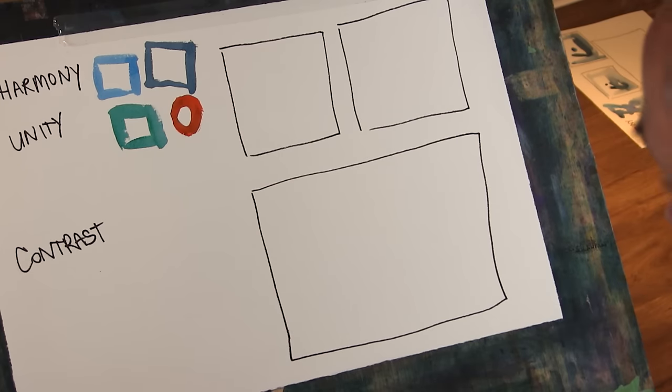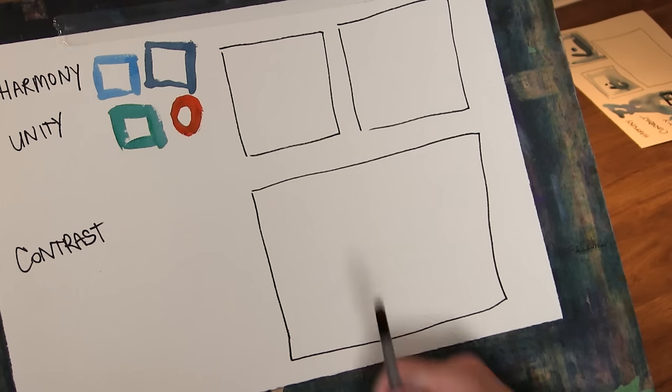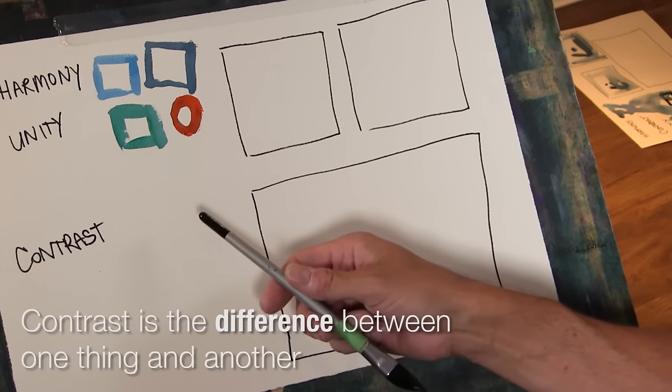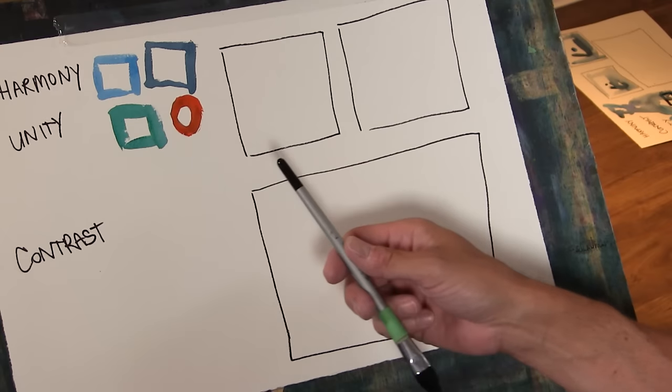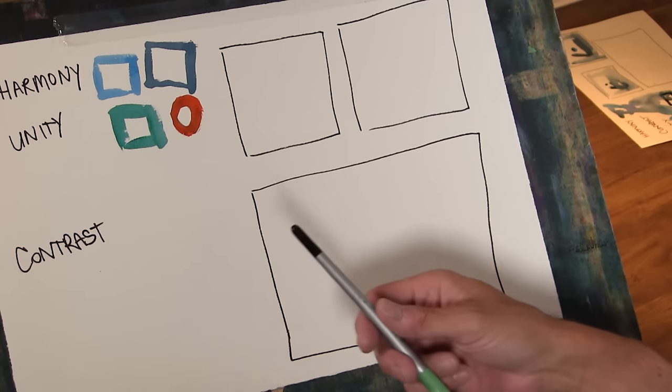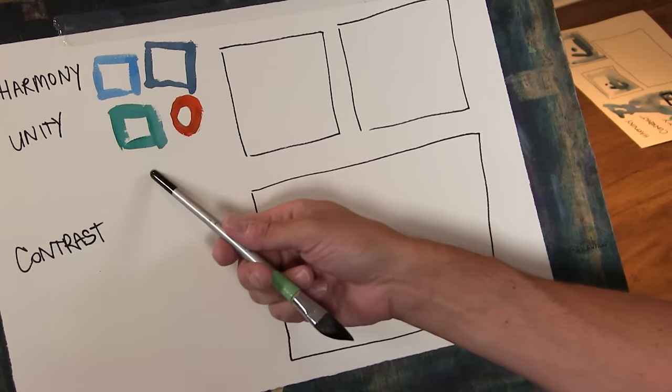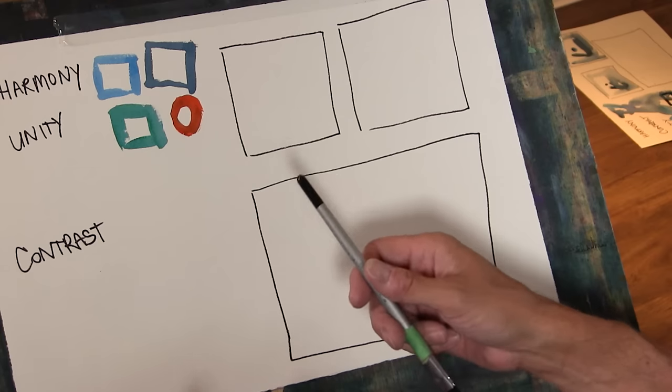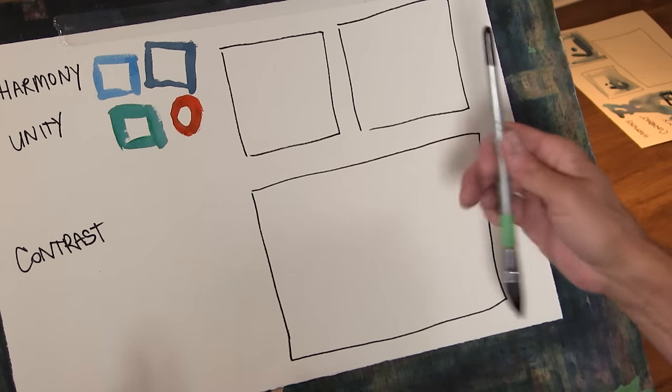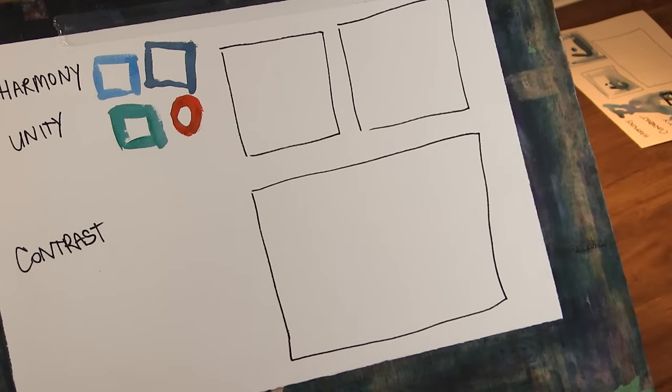So when we're talking about contrast, contrast is the difference from one thing to another. It can be a difference in color, a difference in value, a difference in texture, a difference in shape—could be a rounded shape opposed to a rectangular type shape. So contrast draws the eye. Harmonious things tend to make everything look like it belongs together.